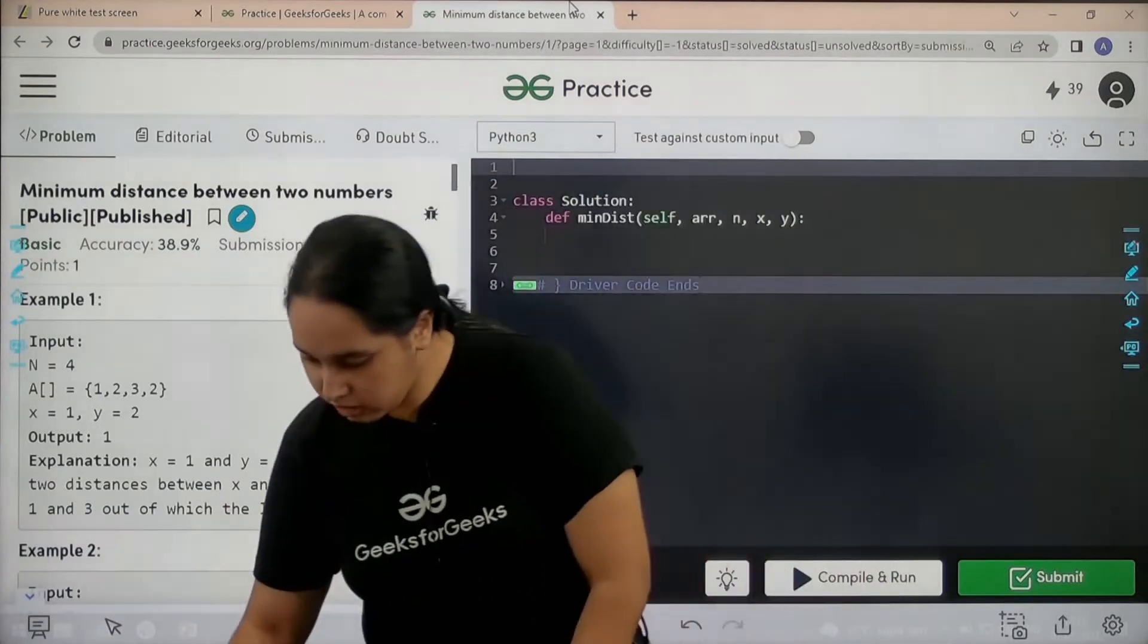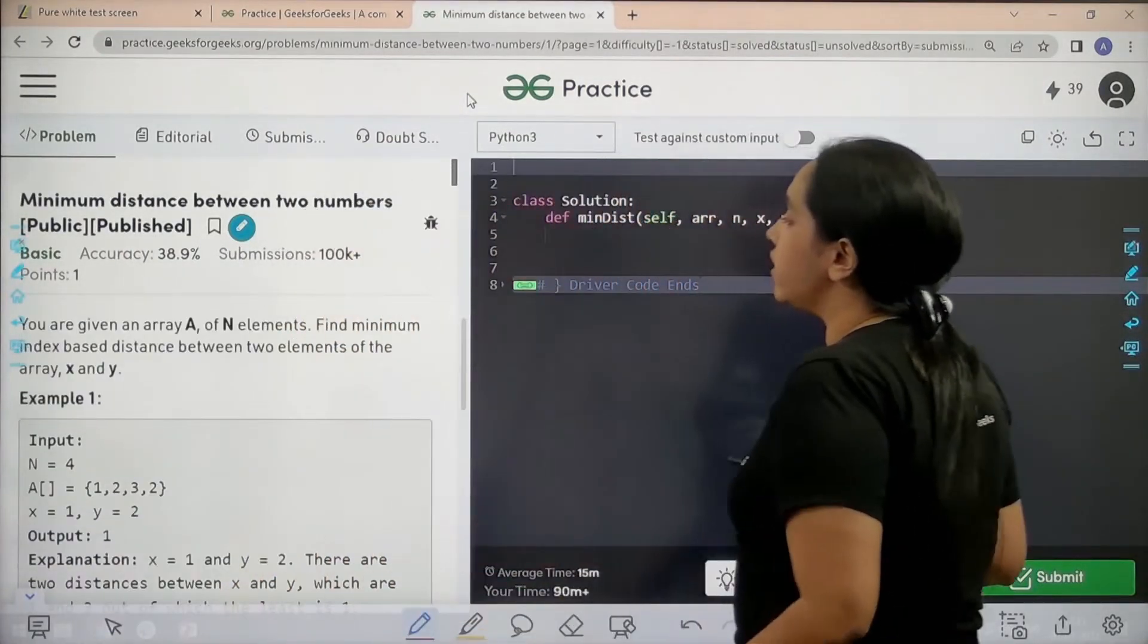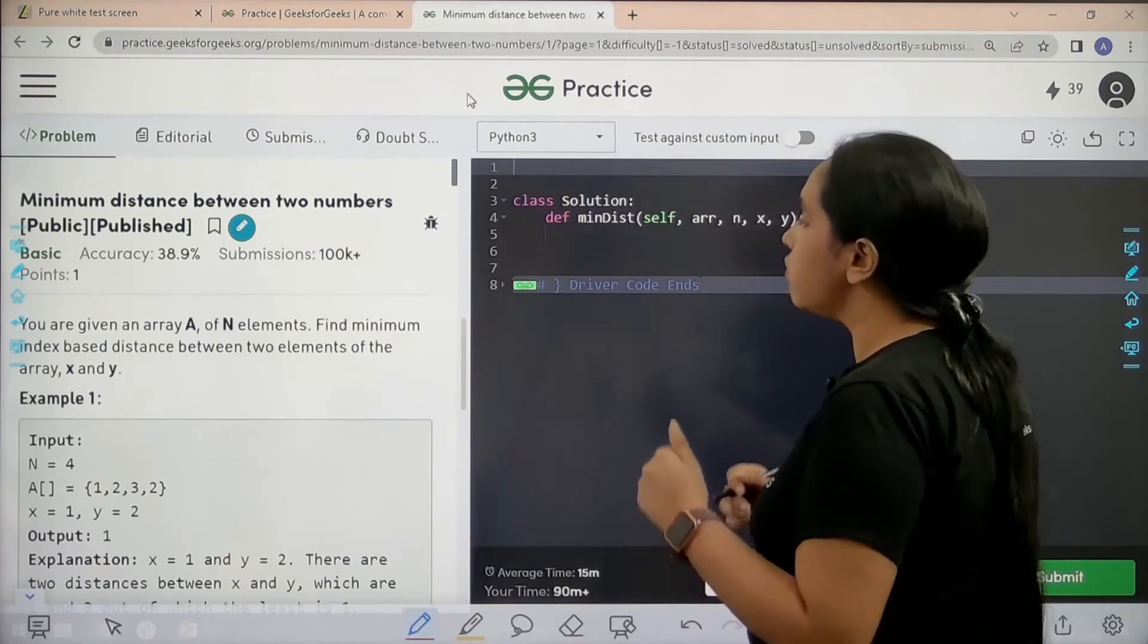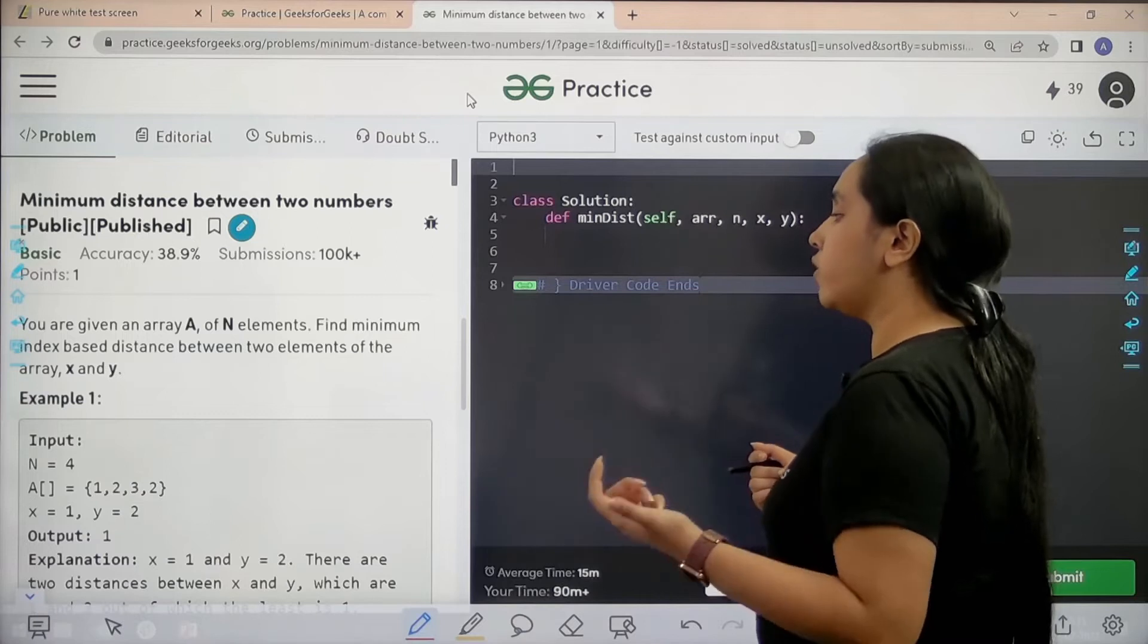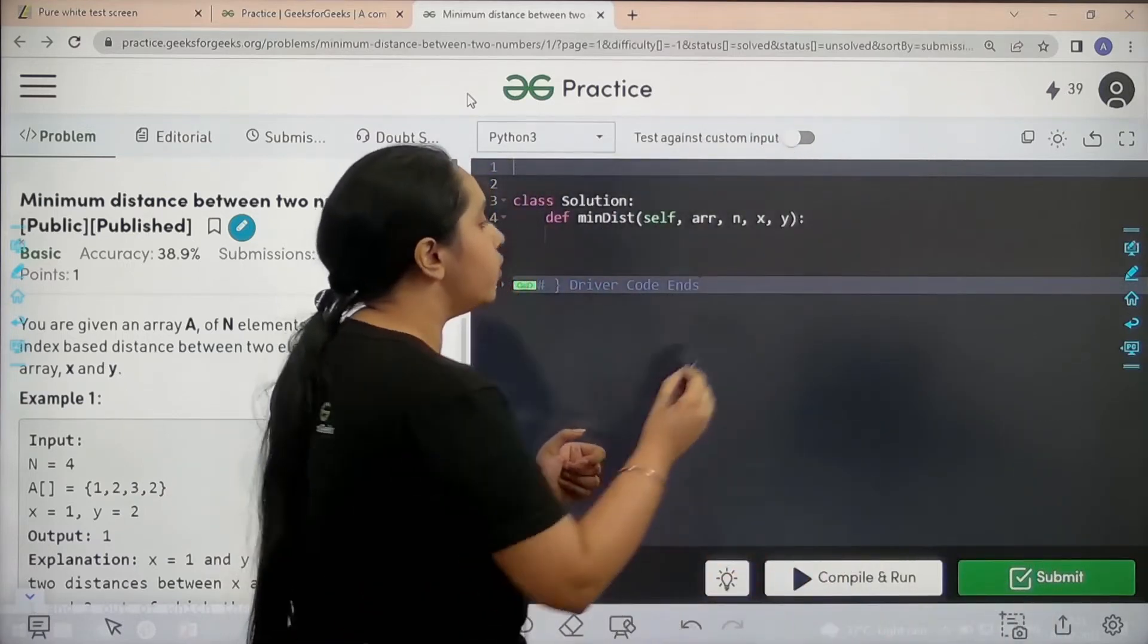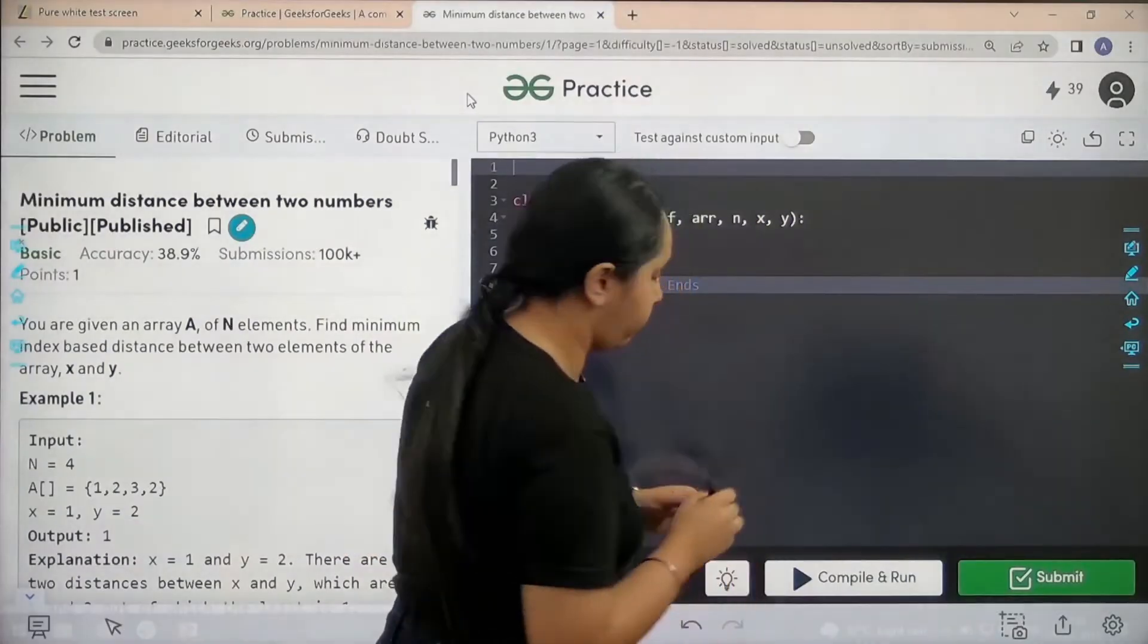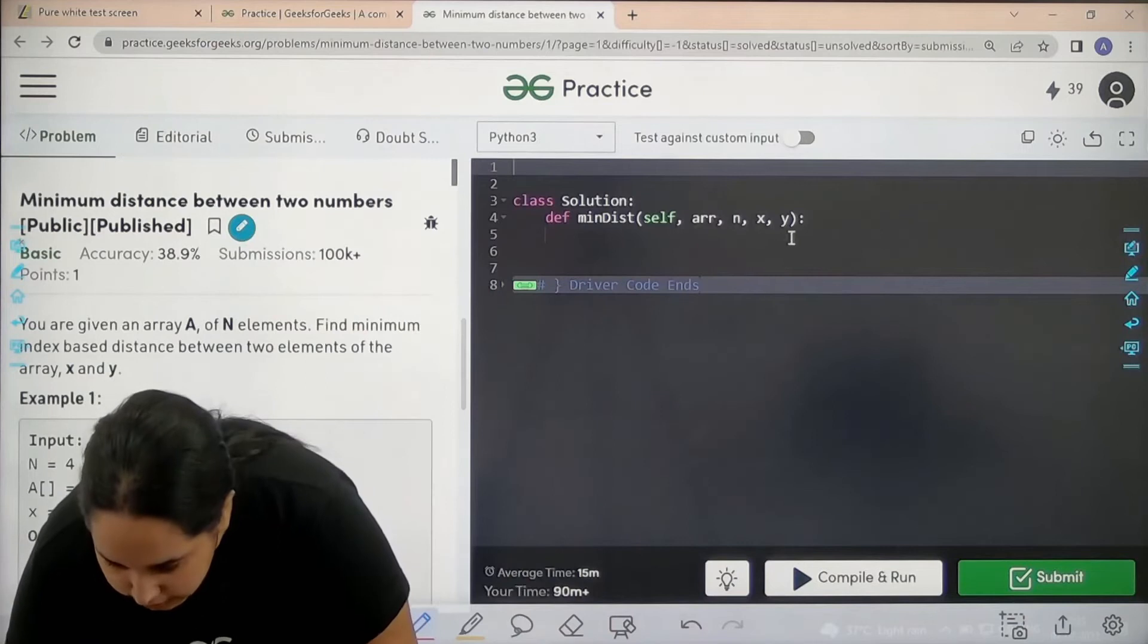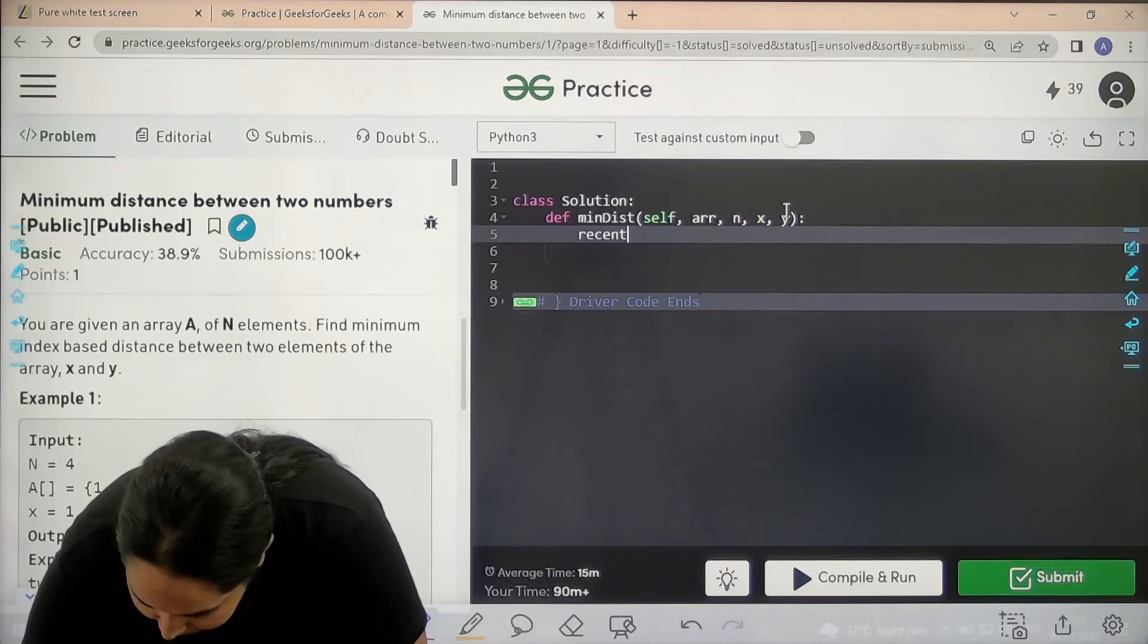I hope the question is clear to you. Now we will code it over here. Let's start. First step is I will declare recent_x, recent_y.